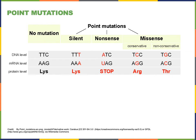Point mutations, which are also known as substitutions, are a change in a single nucleotide within a DNA sequence. The example of a silent mutation we see in this illustration is a point mutation where the cytosine is replaced with thymine, producing a codon that also codes for the amino acid lysine.